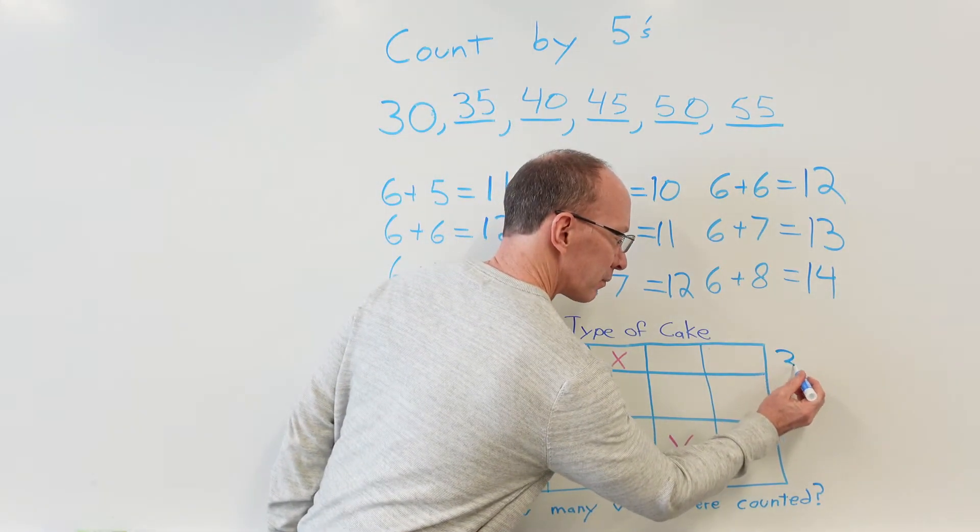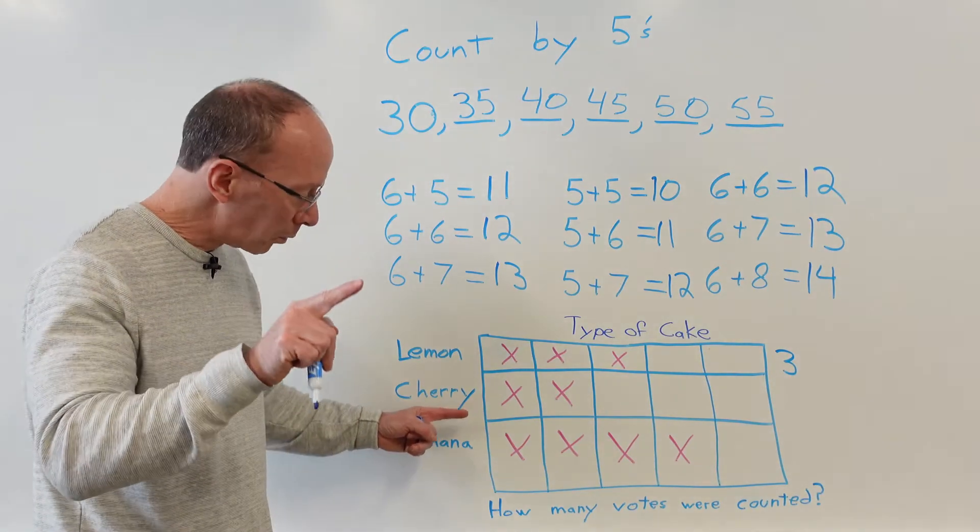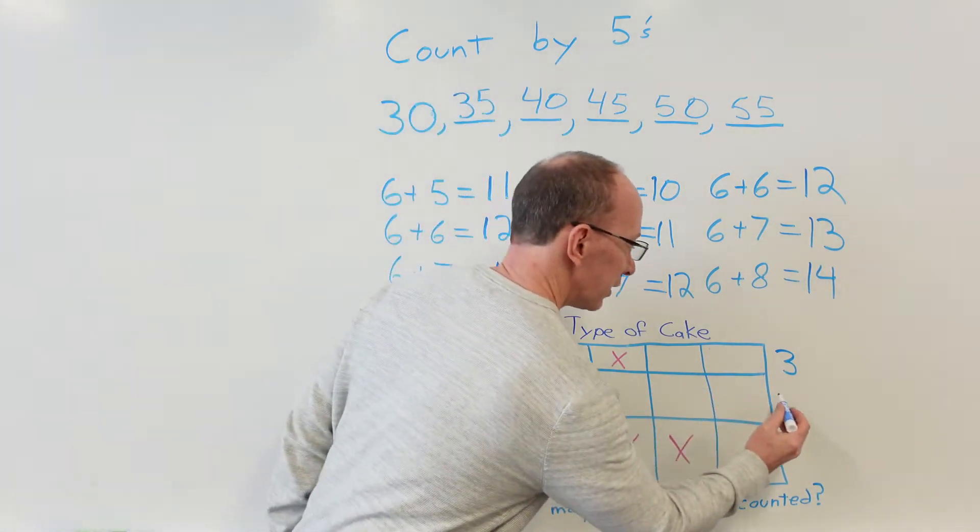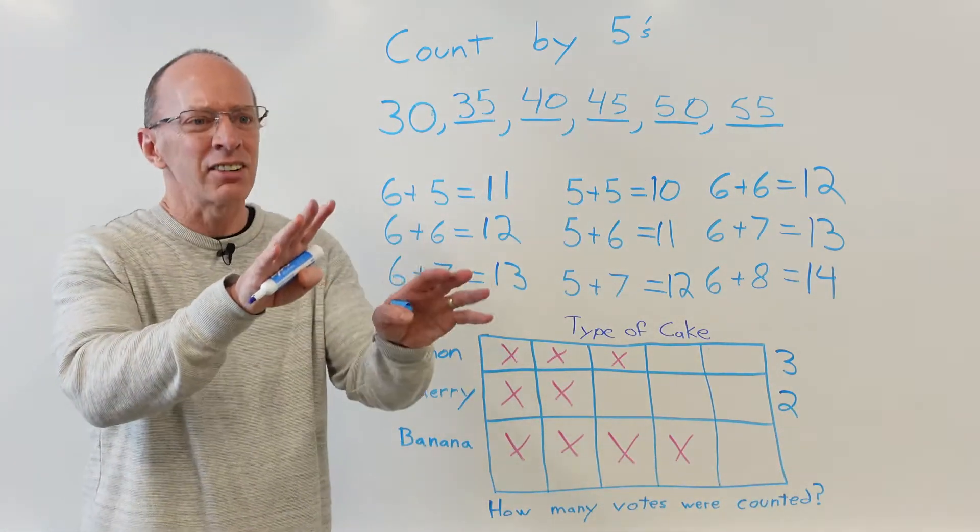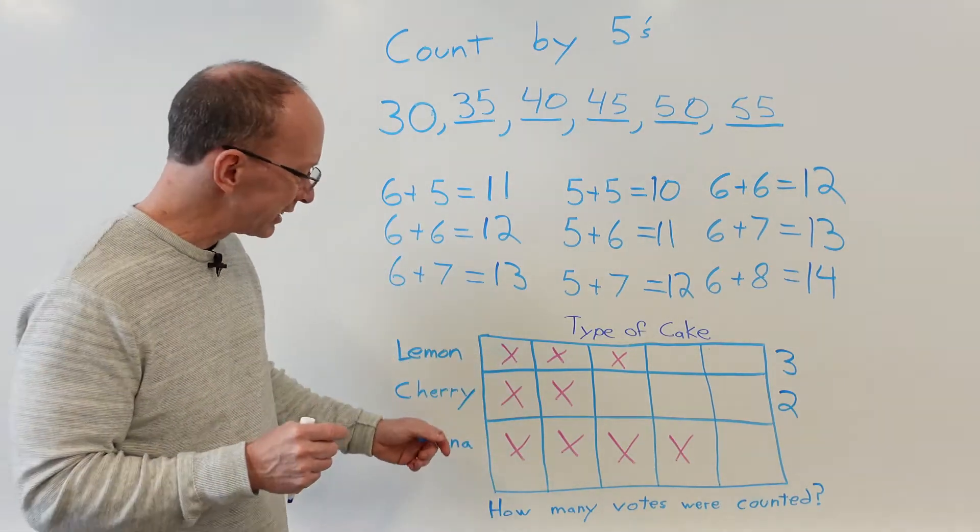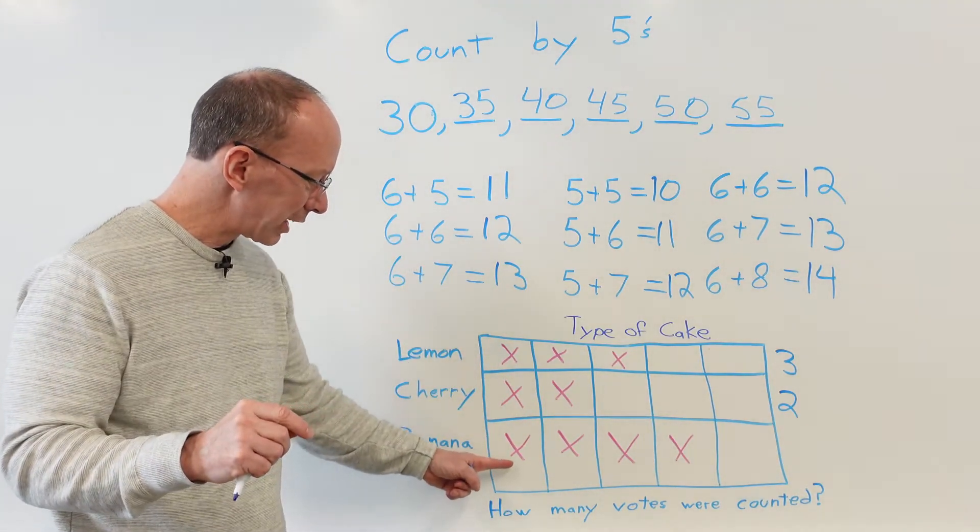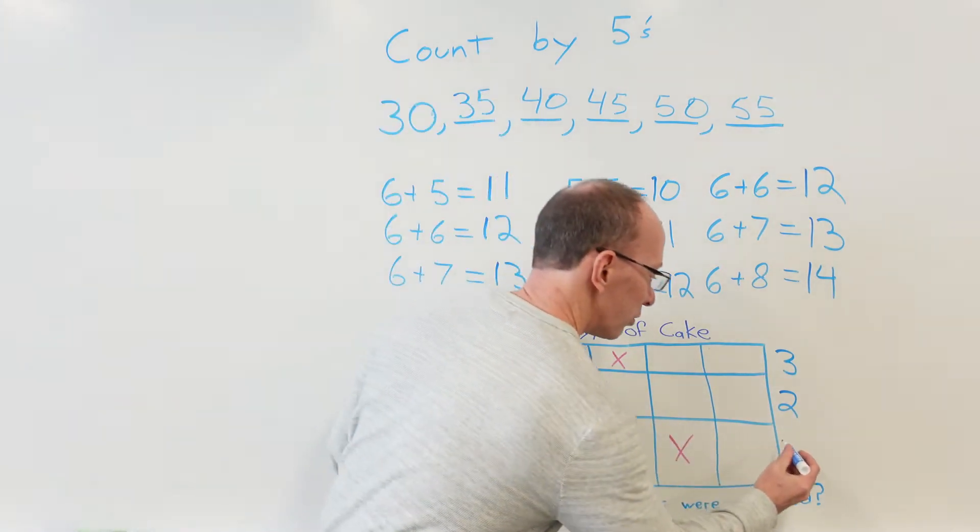How many votes did we get for cherry? One, two, got two votes. And what about the bananas? Hey hey hey, settle down, settle down there monkeys! Oh, they're so excited, they're getting banana cake today. How many votes did we get? We got one, two, three, four - got four votes for the banana.